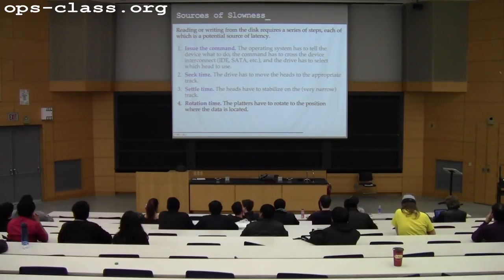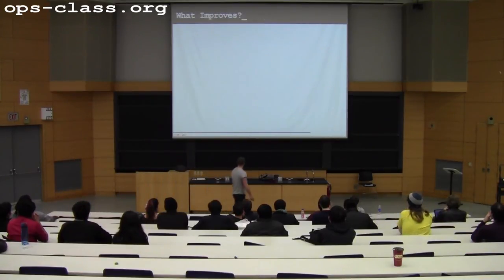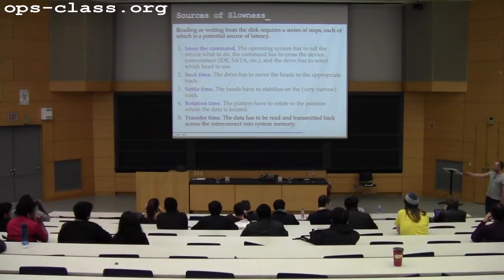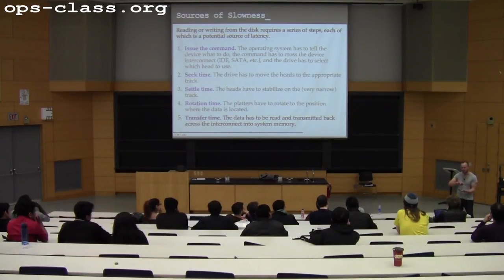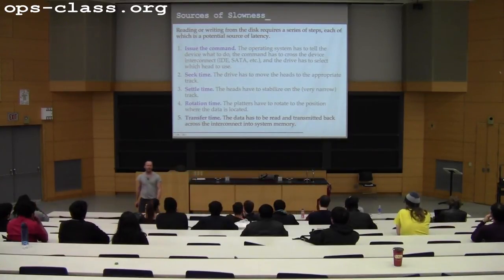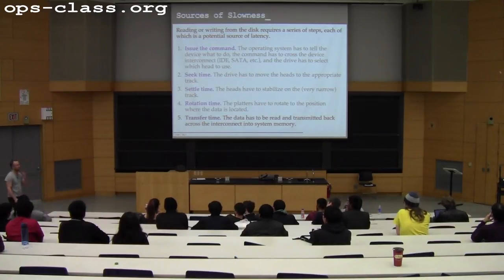Then I have to wait for the data I want to come underneath the head as the disk spins, and then read and transfer the data back to the system. The slow part? The seek-and-settle time — that dominates everything else. Rotation time is the other physical factor, but it doesn't really improve things that much. That's why you don't have disks at 100,000 RPM. Disk rotational speeds have rarely been a selling point and stopped improving at a certain point, because it takes so long to get the heads to the right track that waiting for the data to come around doesn't add much.